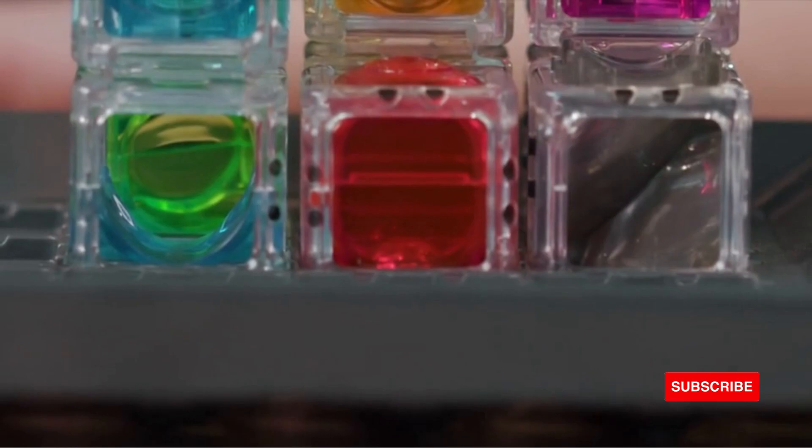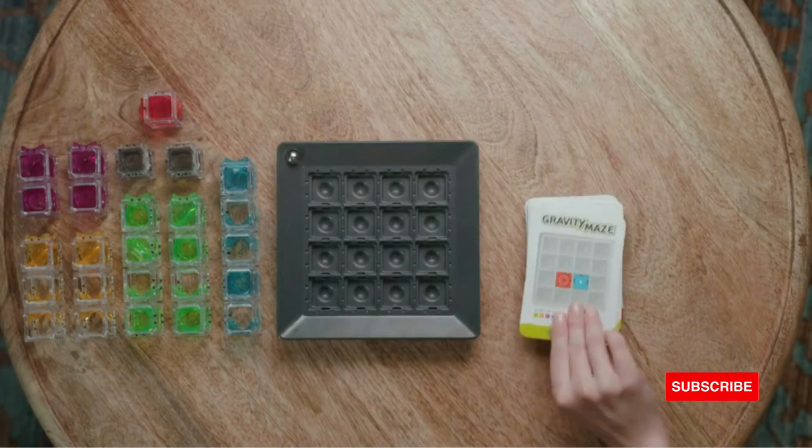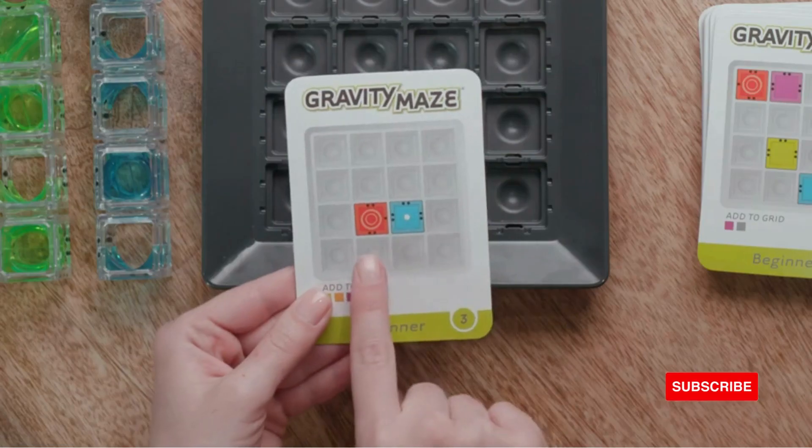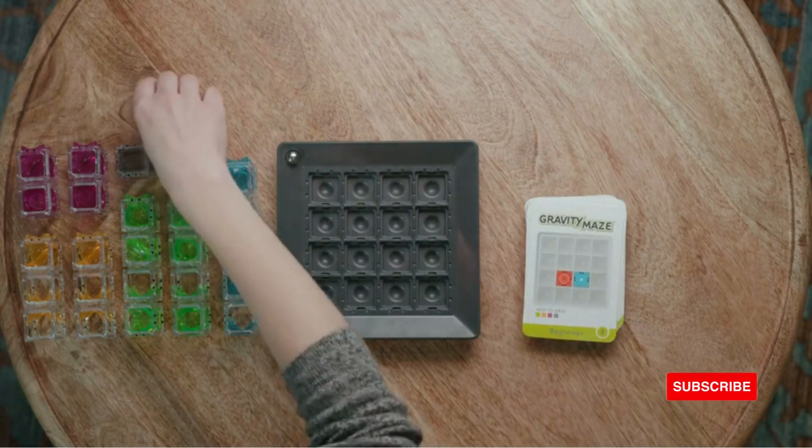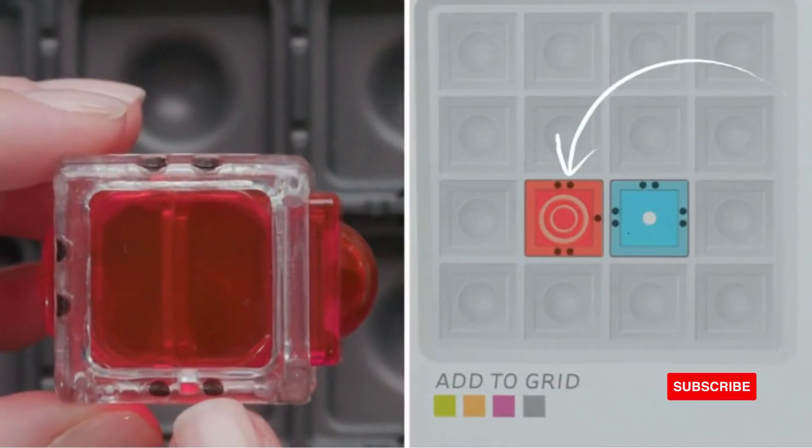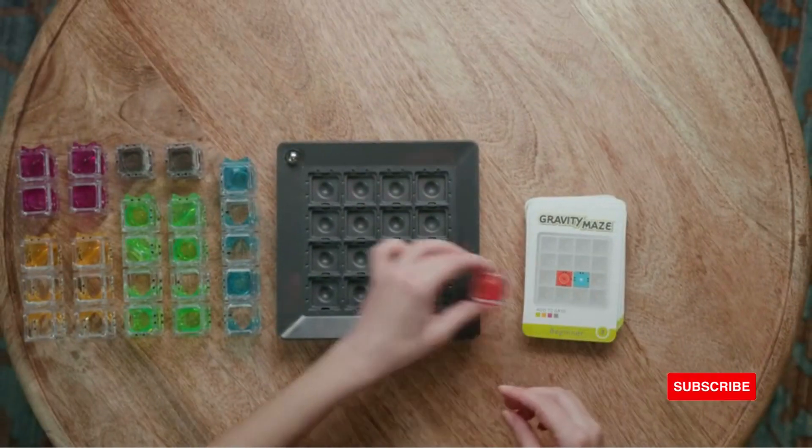Here's a quick rundown of how to play. To begin, choose a challenge card which shows you where to place your starting towers. The black dots on the tower pieces should match the black dots on the card, showing you exactly how the piece should be placed on the grid for this challenge.